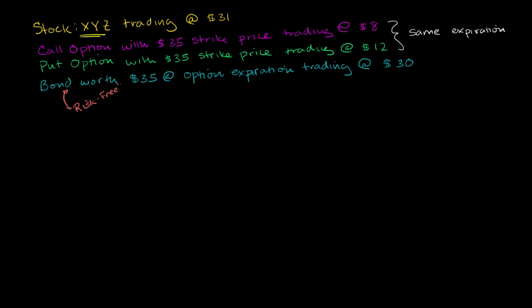Say stock XYZ is trading at $31. We have a call option on stock XYZ with a $35 strike price trading at $8, and a put option with a $35 strike price trading at $12. They both have the same expiration.